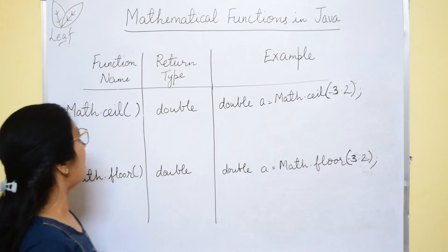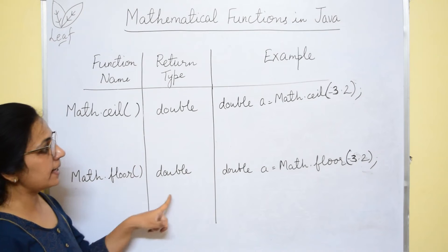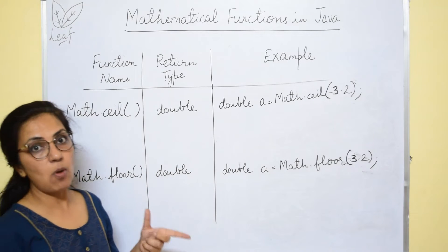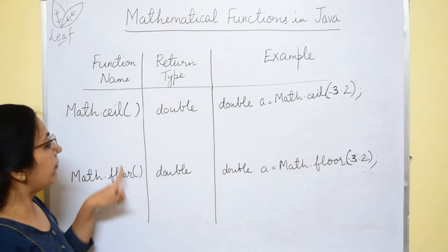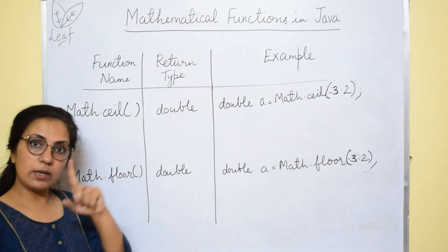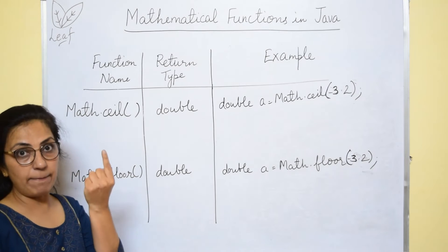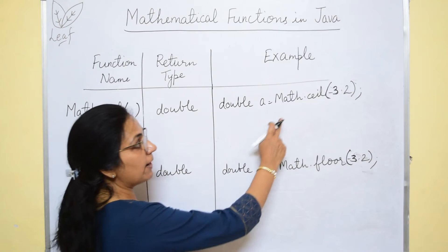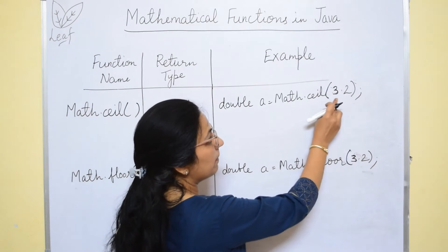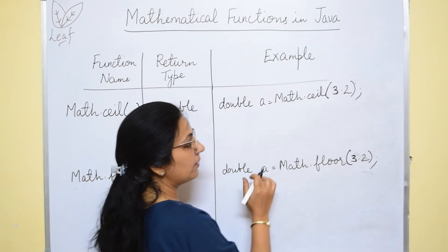Next, we have math.ceil and math.floor functions. These two functions I have written together on the screen so that the difference is more clear to you. Both the functions return double type value. Ceil, you can see that ceiling fan. Floor means down, ceil means up. Right? So, if I have written math.ceil of 3.2 for math.ceil and math.floor, the same number I have taken.